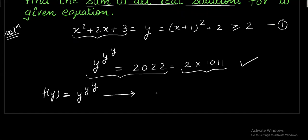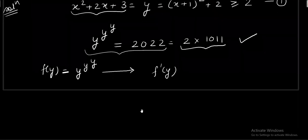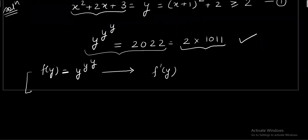And for that I definitely need to know the sign of f dash of y. So let's proceed and try to get f dash of y. For that I'll take log both the sides. On the right hand side I am getting y to the y ln y. Let us differentiate it.